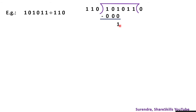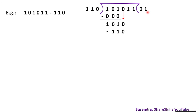When we subtract, 1 minus 0 is 1, 0 minus 0 is 0, and 1 minus 0 is 1, then we bring down the next digit 0. Now we have 1010, which is larger than 110. In binary we can only use 1 or 0 in the quotient, so the quotient digit is 1. Subtracting: 0 minus 0 is 0 and 1 minus 1 is 0.